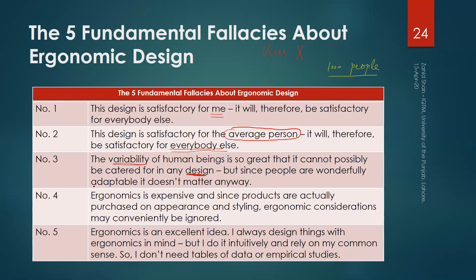The solution assumed in this fallacy is that people are adaptable. So you design according to your own intuition and knowledge without considering the users, and people will eventually adapt to the design. This is called 'fitting the man to the job' (FMJ) — you design the job or workplace, and the person will fit accordingly. This is the fallacy: because there is so much variation, you assume it is not possible to design for all people.